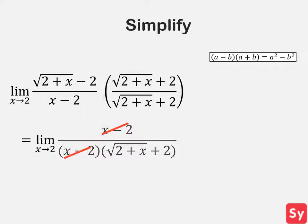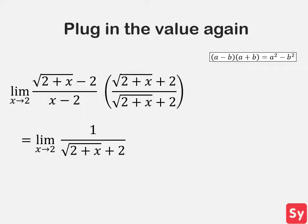This simplifies even more to 1 over the square root of 2 plus x plus 2. Now we can try plugging in the value 2 for x again. This simplifies to the limit as x approaches 2 of 1 fourth, which is 1 fourth, our answer.